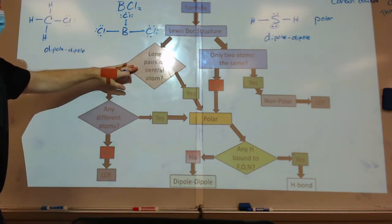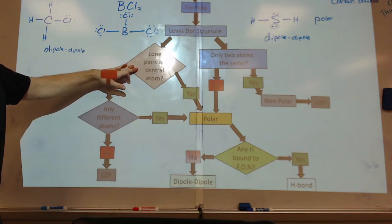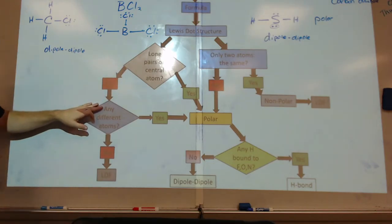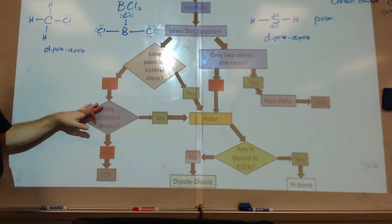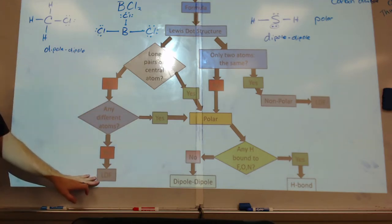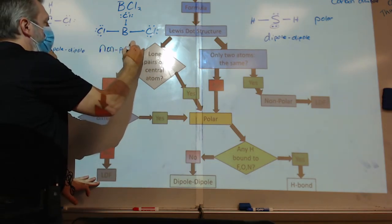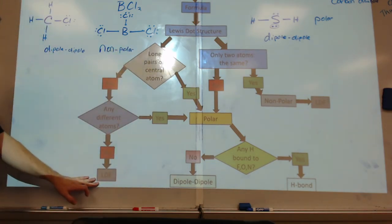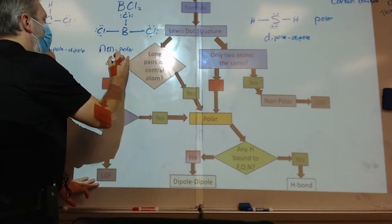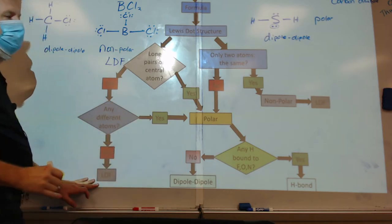I've got my Lewis dot structure. There's more than two atoms. Are there any lone pairs on the central atom? No. Is anybody different? No. What are the only forces? This is non-polar. And since it's non-polar, the only forces available are London dispersion forces. You all see how that works?